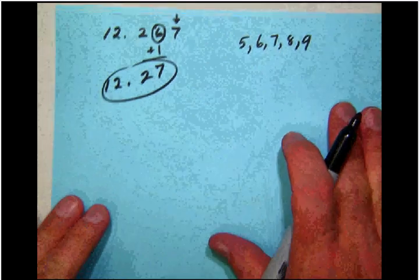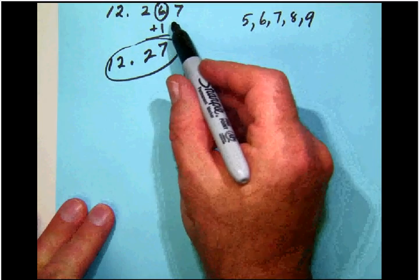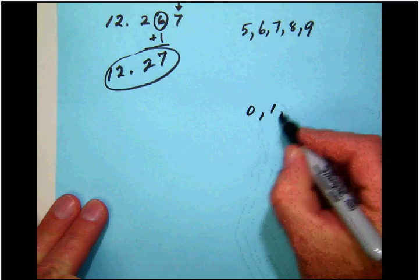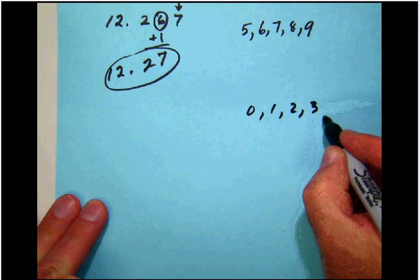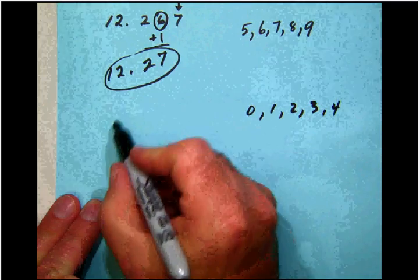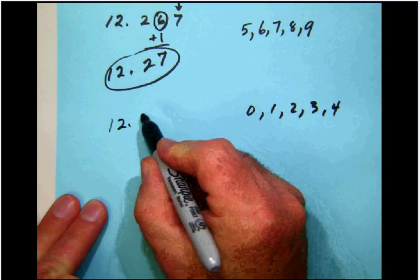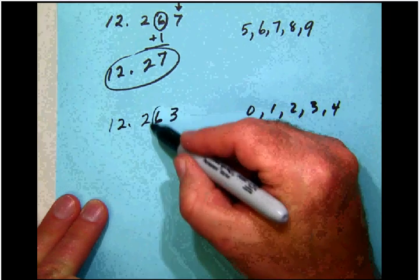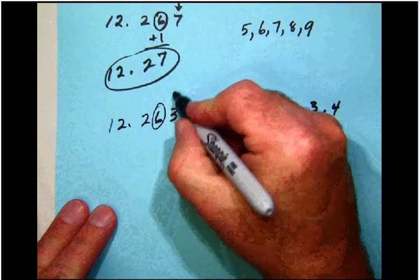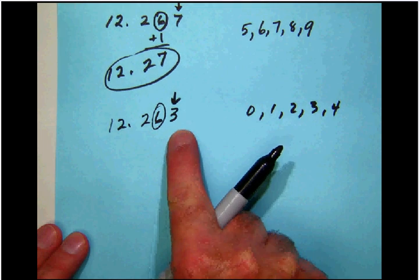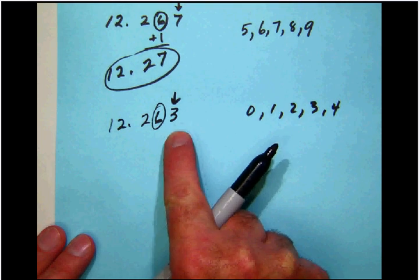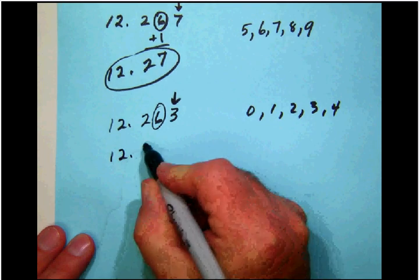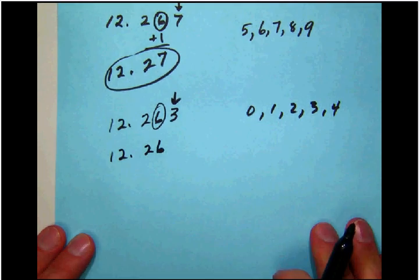On the other hand, for example, had this next digit been a zero, one, two, three, or four—let's say what if this was 12.263. Well, again we would circle the hundredths digit, but since this digit is too small we will not round up. We'll just drop everything after the circle digit and simply write the answer this way.